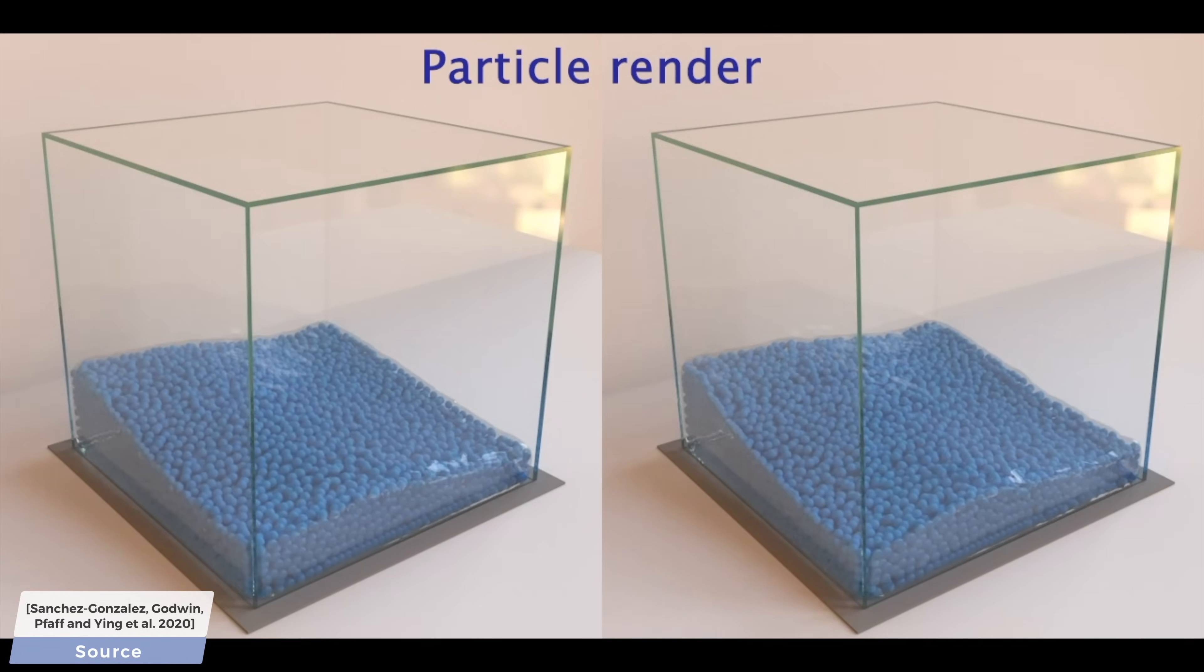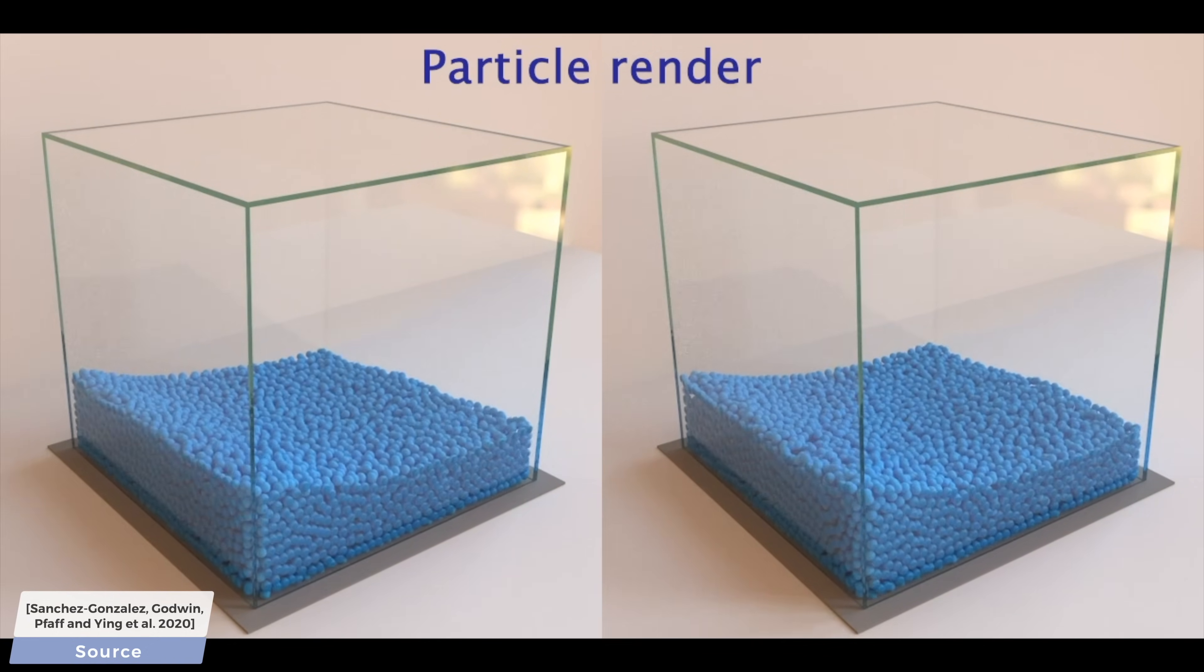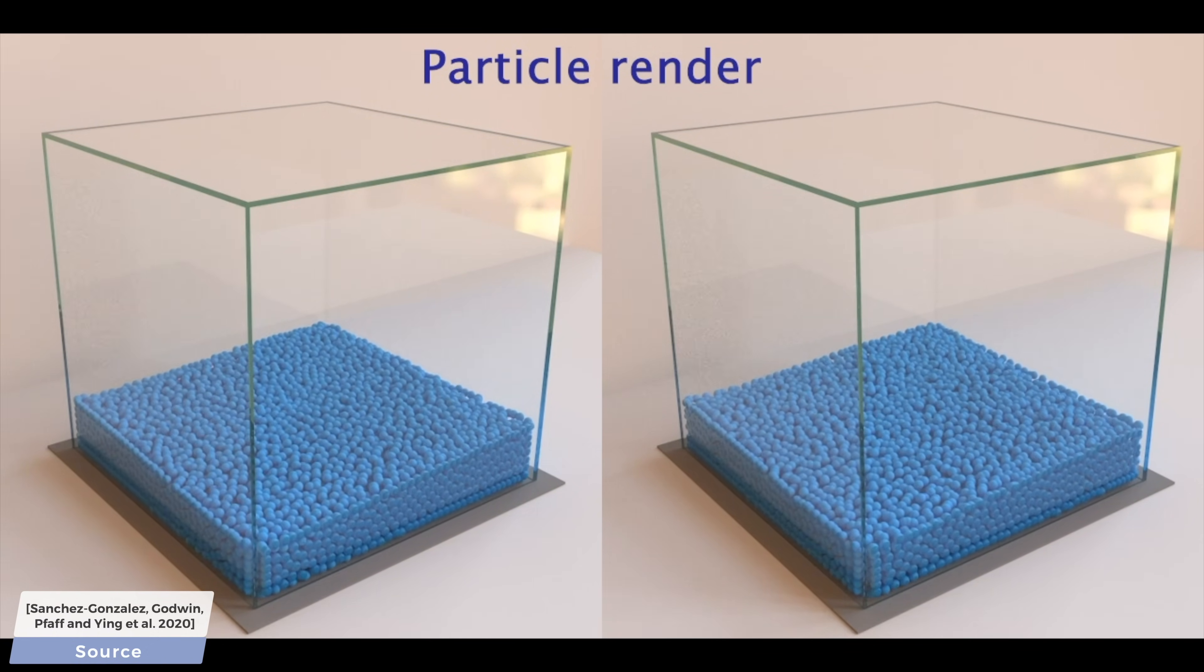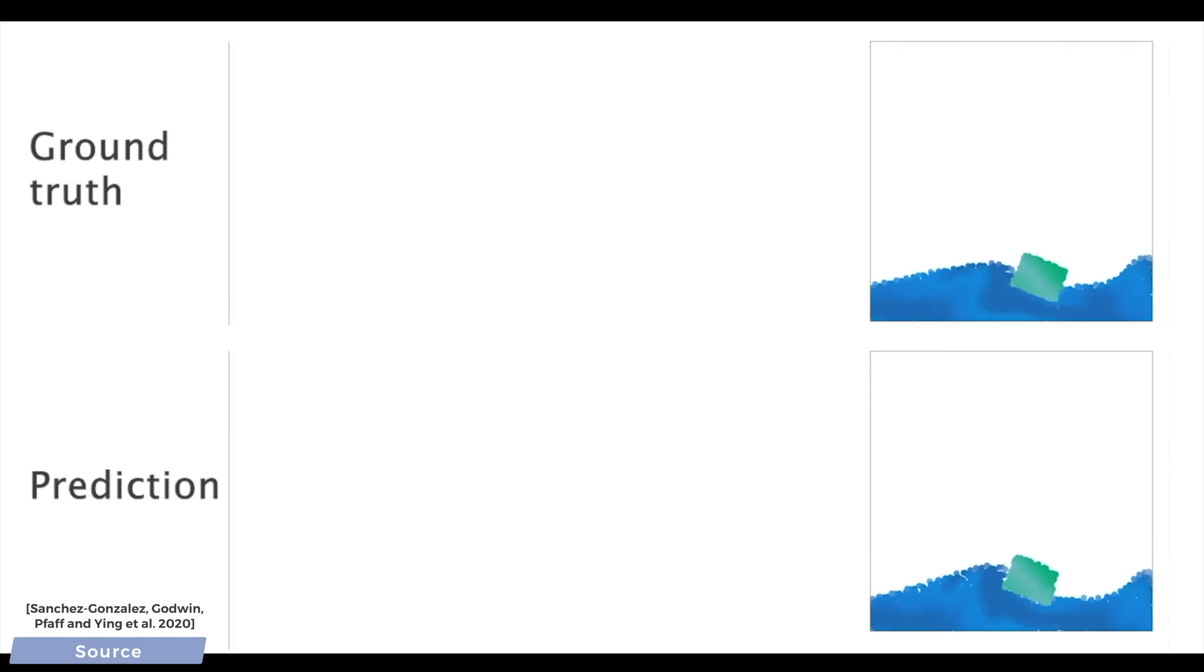Now, this is a great leap in neural network-based physics simulations, but of course, not everything is perfect here. Its generalization capabilities have their limits. For instance, over longer timeframes, solids may get incorrectly deformed.